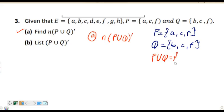P union Q means we combine the elements that are in set P with those that are in set Q. In set P we have A, C, F. In set Q we have B, C, F. So P union Q equals {A, B, C, F}.